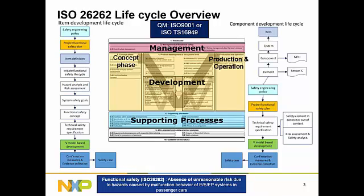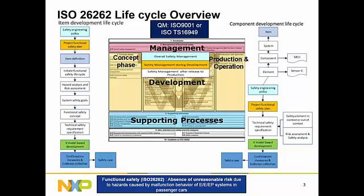From a standard point of view, before we begin, the standard mandates a minimum requirement of having a quality management system as the starting point for any development. This could be ISO 9001 or ISO TS 16949. On the management of functional safety, we talk about organizational-level safety management, what needs to be done during development, and how safety management is handled after release to production. On the concept phase, it is a risk-based approach like FMEA and FMEDA — these are the kinds of activities we do to determine the safety requirements and what needs to be done.